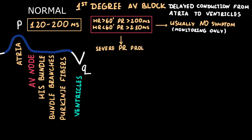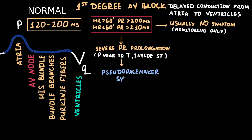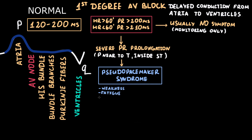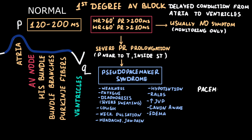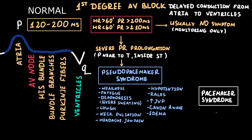In severe cases of first-degree AV block, when the P wave is near or inside the previous ST segment or T wave, it can cause pseudo-pacemaker syndrome. This includes weakness, fatigue (especially with physical activity), diaphoresis, cough, neck pulsation, headache, and jaw pain. Physical examination may reveal hypotension, rales, increased jugular vein pressure with cannon A waves, and peripheral edema. Because the clinical presentation of pseudo-pacemaker syndrome is similar to pacemaker syndrome, let's review the features of pacemaker syndrome.